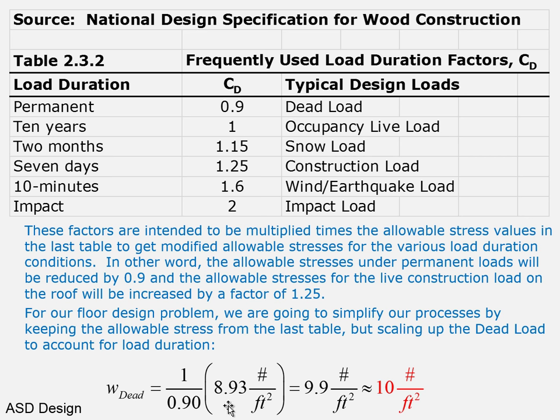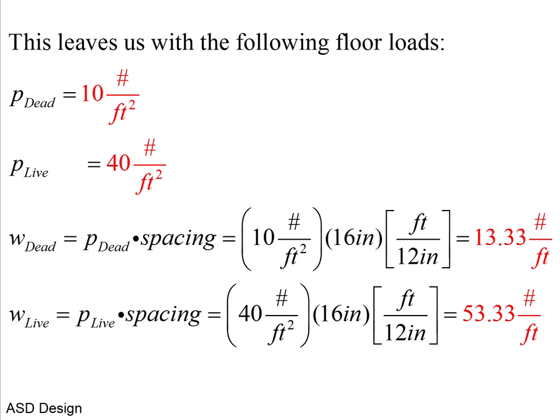The calculated dead load upper limit was 8.93 psf. Dividing by 0.9 gives 9.9 psf, which we round up to 10 psf. This 10 psf dead load is almost universally accepted as the starting value for wood floor design. Live load is 40 psf for main floors or 30 psf for secondary floors.